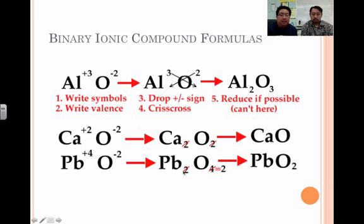And then the same thing for lead. This happens to be lead four, and this is oxide again. So we cross, so the lead goes to one, lead four goes to one, and the oxide goes to two.